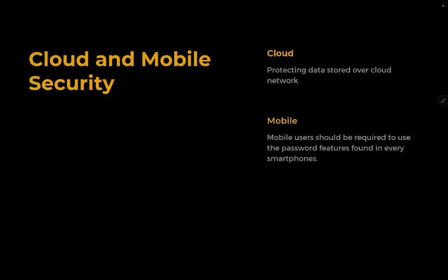Let's talk about cloud and mobile security. Cloud security involves protecting data stored over cloud networks. For example, in our section we use Google Drive, where everyone can edit and upload different files. Security here focuses on limiting the people who can access the Google Drive. For mobile security, users should use password features found in every smartphone. We have multiple ways to secure mobile phones: passwords, PINs, iris or facial recognition, voice recognition, and fingerprint scanners.